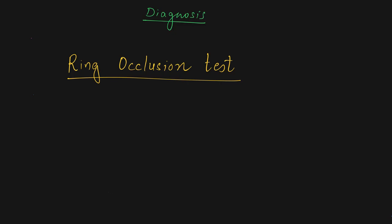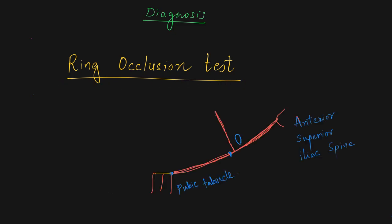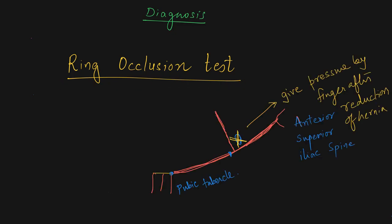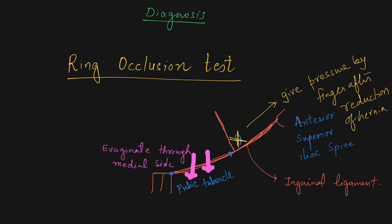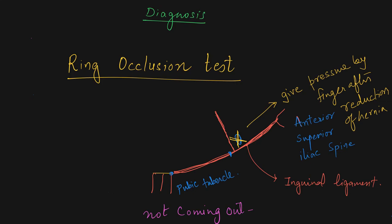To diagnose hernia we can use the ring occlusion test. We press a finger over the deep inguinal ring and ask the patient to cough. If the hernia evaginates and comes out as a swelling on the medial side of our finger, it is a direct inguinal hernia. If it does not come out and just gives a jerk to our finger, that is an indirect inguinal hernia.